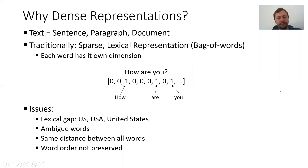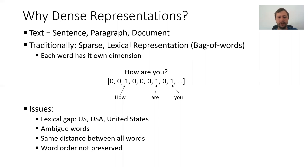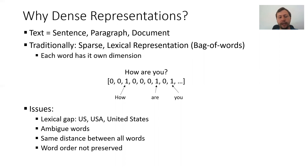This has several issues. First of all, there's the lexical gap. For example, the words US, USA, United States, United States of America — these are all different words and would be in different positions in this vector. So if one document talks about US and the other talks about United States, from the vector you have no idea that there's a relationship between US and United States.